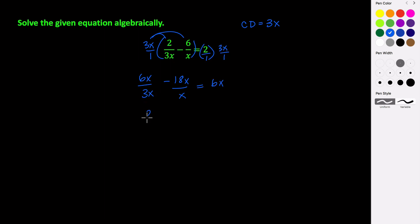6x divided by 3x, that's just 2. Negative 18x divided by x is negative 18. Equals 6x. 2 minus 18 is negative 16. Do your division, divide by 6, reduce your fraction, and we get that negative 8 thirds is equal to x. So the value of x is negative 8 thirds.